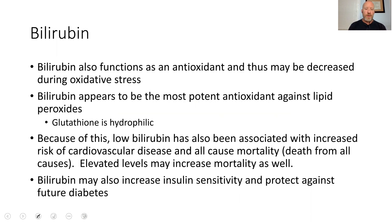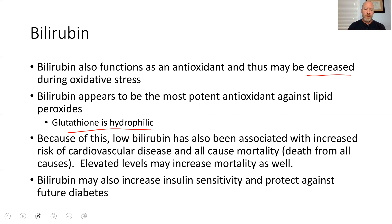Here's the key point: bilirubin is an antioxidant. It turns out that it's an antioxidant against lipophilic reactive oxygen species — essentially fat-soluble, not water-soluble reactive oxygen species. It's an antioxidant against lipid peroxidation. Therefore, it may be decreased during oxidative stress. Glutathione, on the other hand, is hydrophilic — it tends to be used for water-soluble reactive oxygen species. So this is really important information.